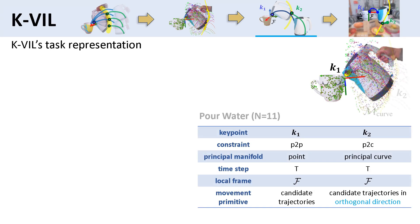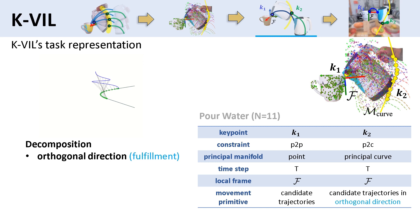For example, KIVOS learns a point-to-point and a point-to-curve constraint from 11 demonstrations of the pouring task. The movement primitives of the point-to-point constraint are learned from candidate trajectories. For a non-point-to-point constraint, we try to mimic the demonstrated motion to approach the constraint in its orthogonal direction. The movement primitives for K2 are learned from the trajectories in the orthogonal direction to the principal curve.